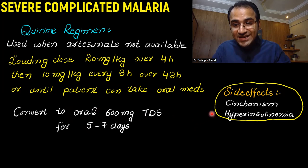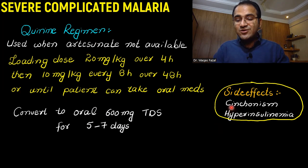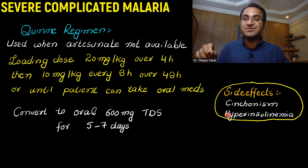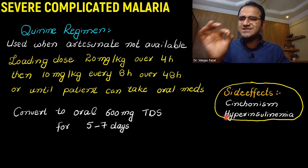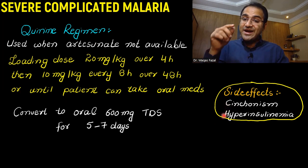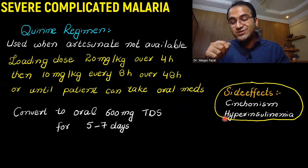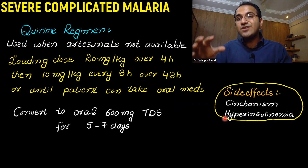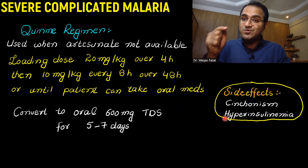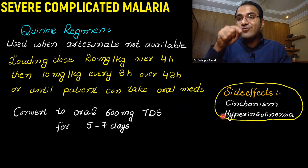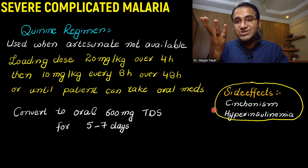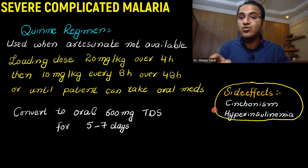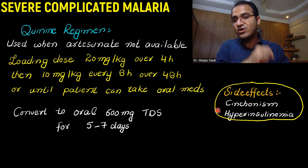Side effects of quinine include cinchonism and hyperinsulinemia. Cinchonism refers to hearing loss, tinnitus, flushing, and nausea — tinnitus and hearing loss are the classical signs of cinchonism after quinine. Hyperinsulinemia is important because malaria already causes hypoglycemia through parasite consumption of glucose. Quinine causes excessive insulin secretion, pushing the patient further into hypoglycemia. Therefore, you must monitor the patient's blood glucose regularly — every 2 hours when giving quinine regimen — due to the significant risk of hypoglycemia.